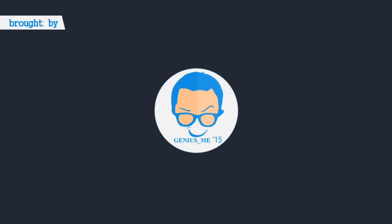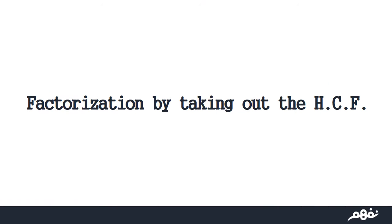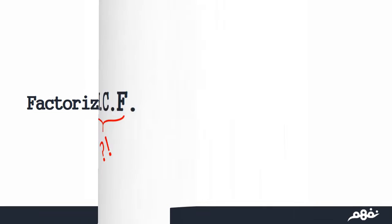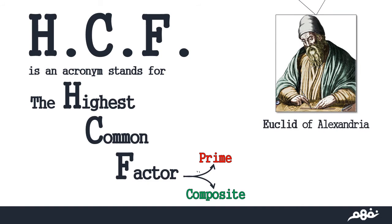Hello my colleagues, and this is a new math lesson on factorization by taking out the HCF. But what does this mean? The HCF is an acronym which stands for the highest common factor. This factor may be prime or composite, and this was first revealed by the Greek scientist Euclid of Alexandria.